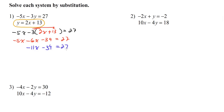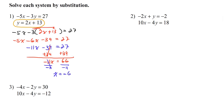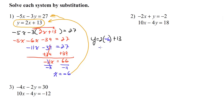Minus 39 equals 27. Now we can add 39 to both sides, and we get x equals negative 6. Now that we know x is negative 6, we can plug it into either one of these equations — the second one is obviously easier. So y equals 2 times negative 6 plus 13. 2 times negative 6 is negative 12, and negative 12 plus 13 is 1. So our solution is the ordered pair negative 6 comma 1.